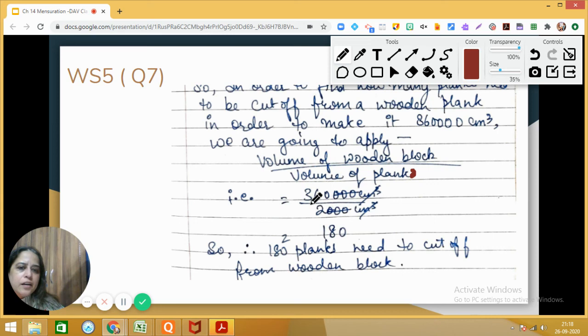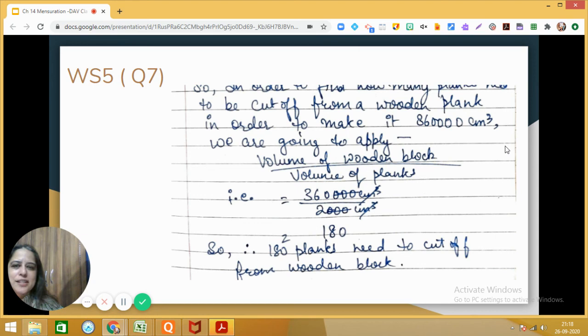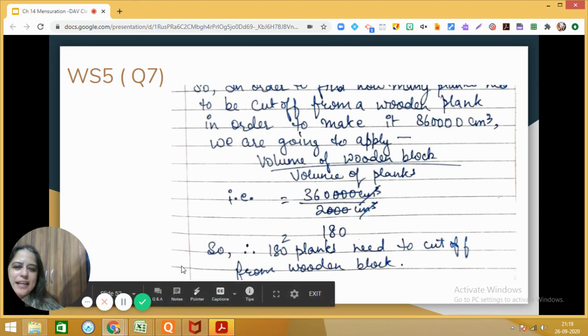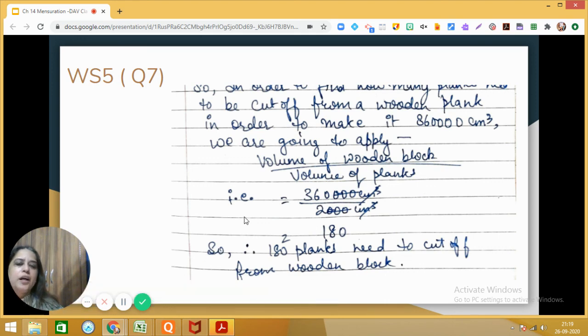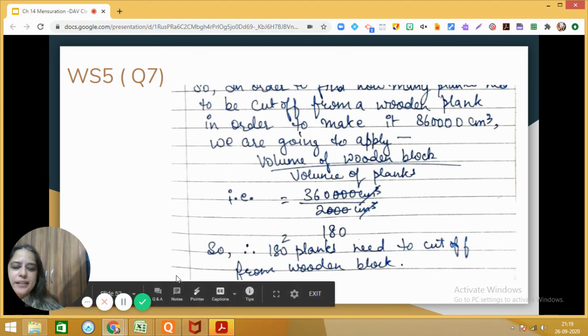And when we calculate this, we get this as 180. So 180 planks can be cut off from the wooden block of given dimensions. I hope this question is clear to you. Keep practicing such questions, yes, have a nice day. And it is really, really important to learn how to convert one unit into another. So keep practicing such questions. Bye bye, take care.